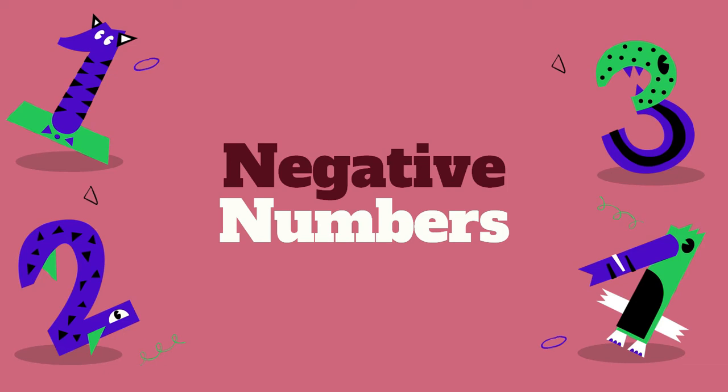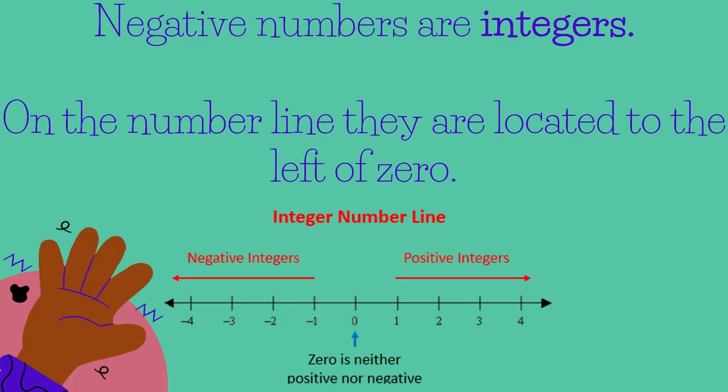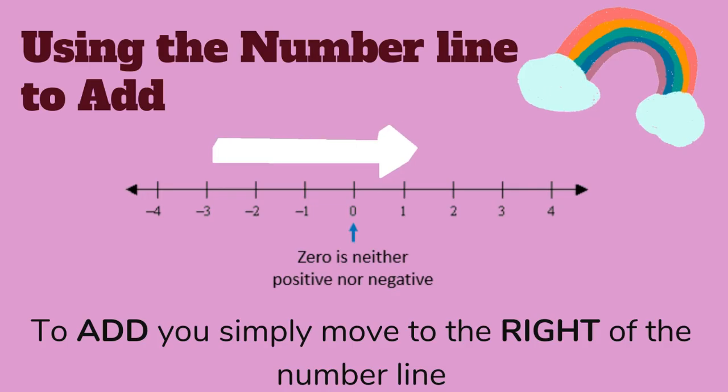Welcome back to Math with Miss B. Today we're learning negative numbers. Negative numbers are integers, and on the number line they are located to the left of zero.